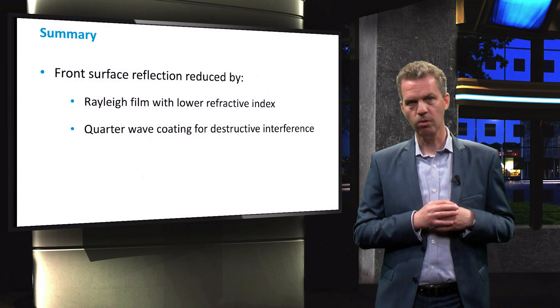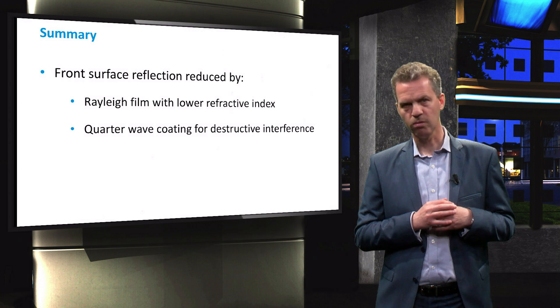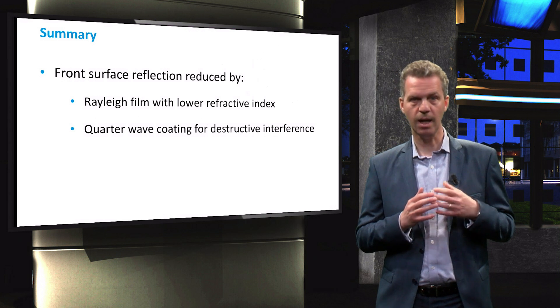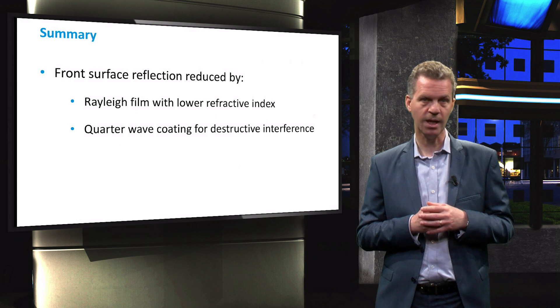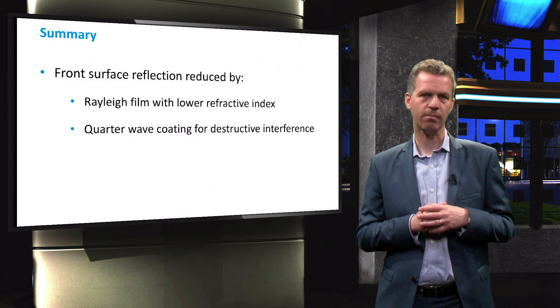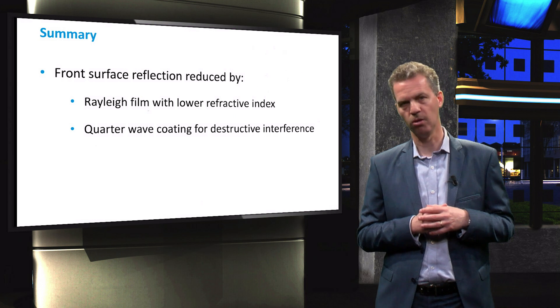In the next video, we will continue with the third method to reduce reflection on the front surface, namely by surface texturing, and we will discuss the role of the back-metallization of crystalline silicon solar cells.